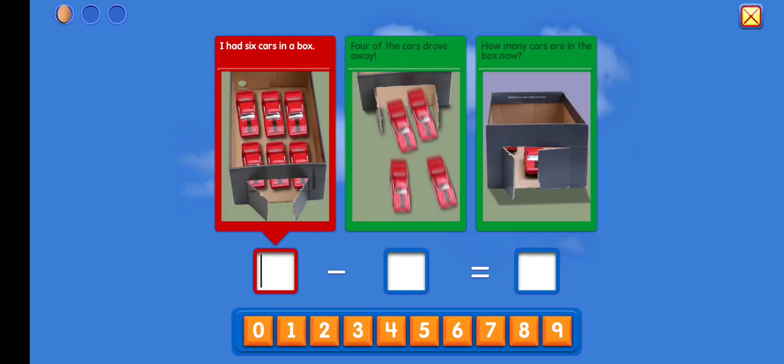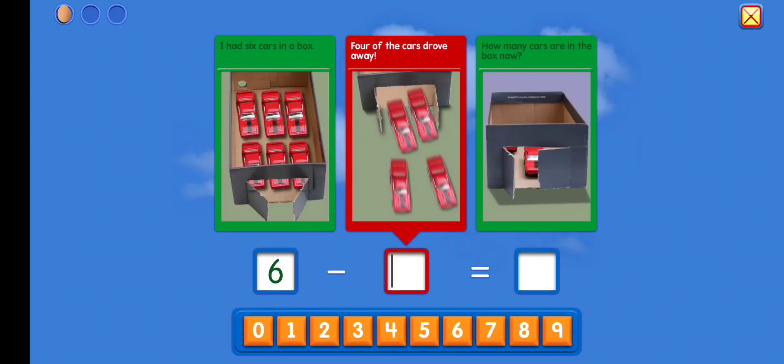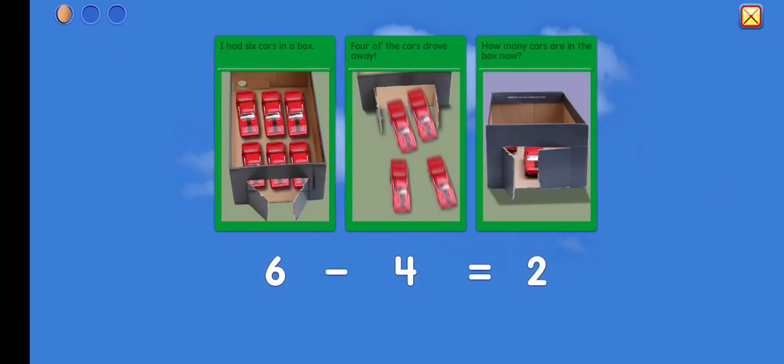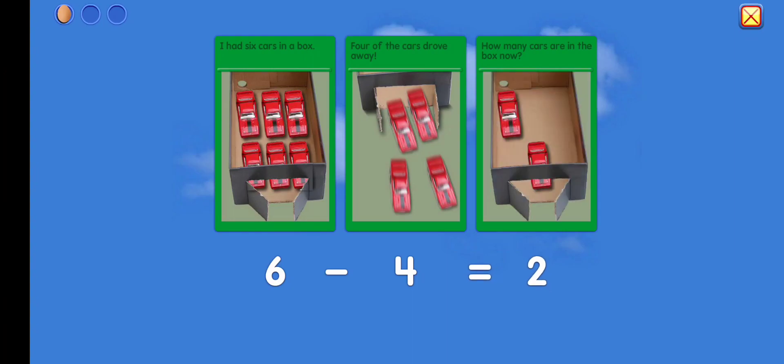I had six cars in a box. Six. Four of the cars drove away. Minus four. How many cars are in the box now? Equals two. Six minus four equals two. Excellent!